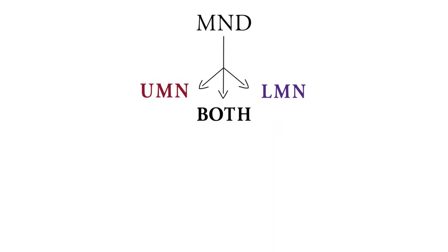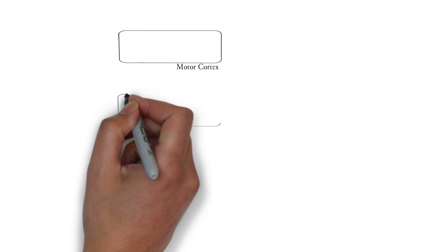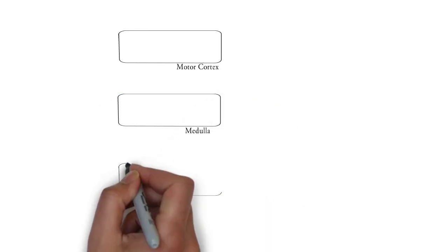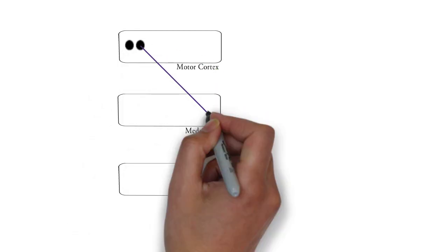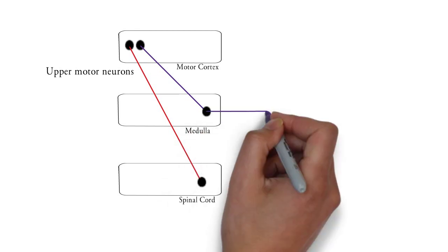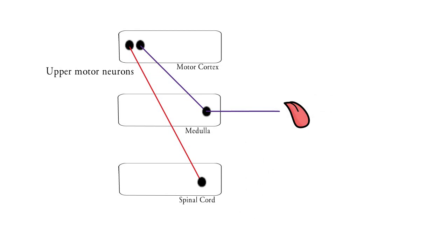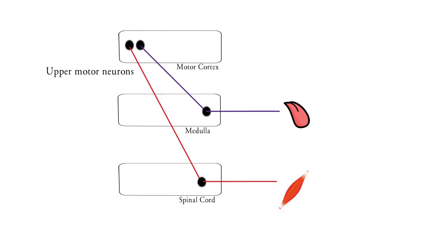For now, just keep this classification aside — we will get back to it later in this video. For understanding the types, let's understand the basic concept with a simple diagram. Let this be the motor cortex, this be the medulla, and the last is the spinal cord. Upper motor neurons start from the primary motor cortex in the precentral gyrus and control the motor outflow of both spinal nerves and cranial neurons. From the medulla, there are lower cranial nerves — that is, from the 9th to 12th — and from there outflow goes to respective muscles like the tongue muscles. And from the spinal cord, nerves innervate the peripheral muscles through the neuromuscular junction.